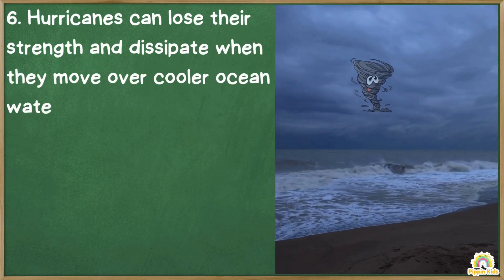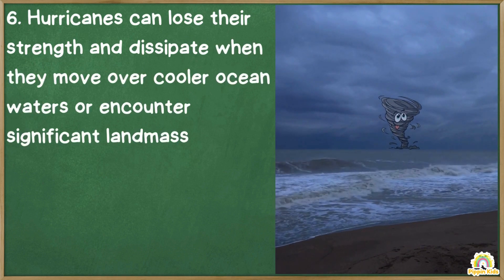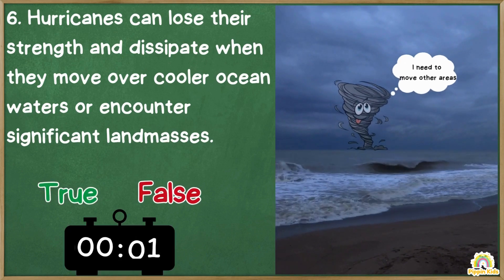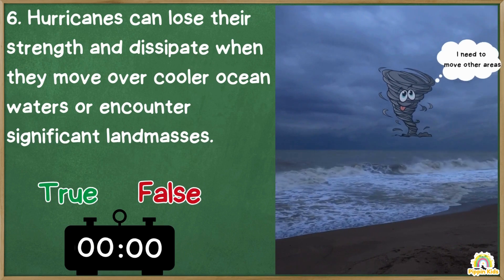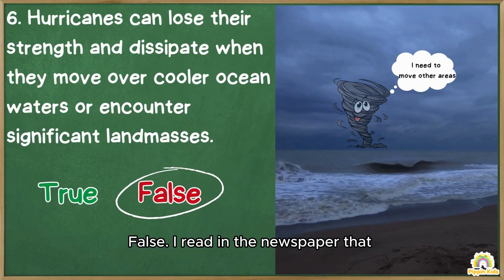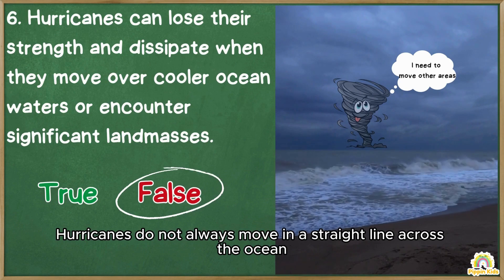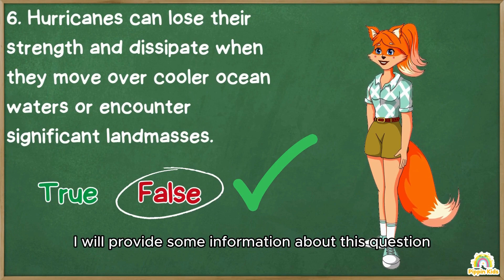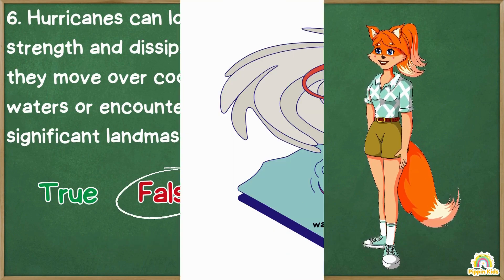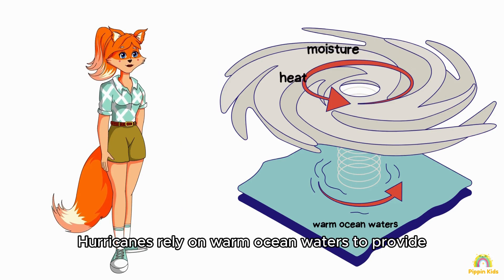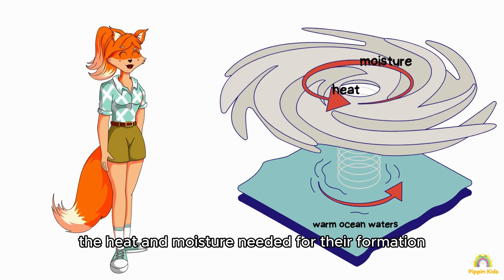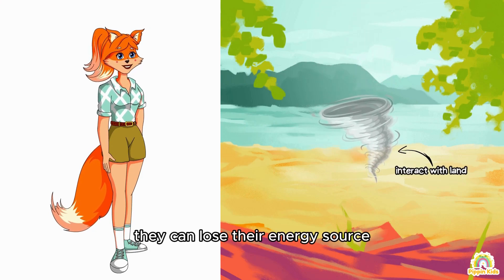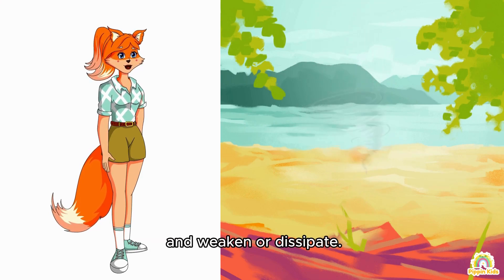Question number six: hurricanes can lose their strength and dissipate when they move over cooler ocean waters or encounter significant landmasses — true or false? False. I read in the newspaper that hurricanes do not always move in a straight line across the ocean. You're right. Hurricanes rely on warm ocean waters to provide the heat and moisture needed for their formation and maintenance. When they move over cooler waters or interact with land, they can lose their energy source and weaken or dissipate.